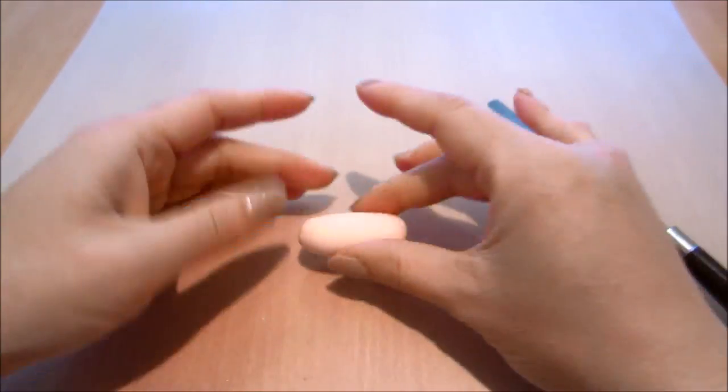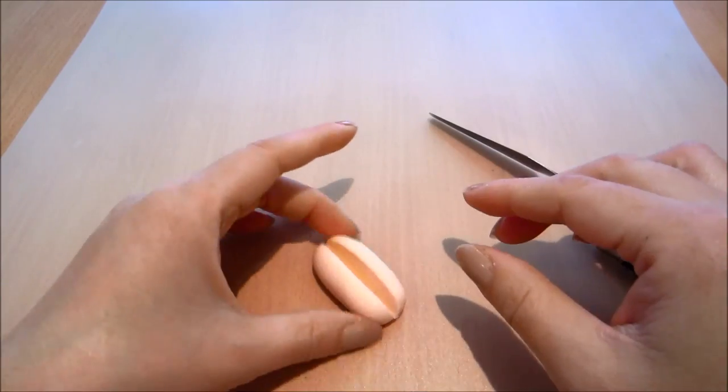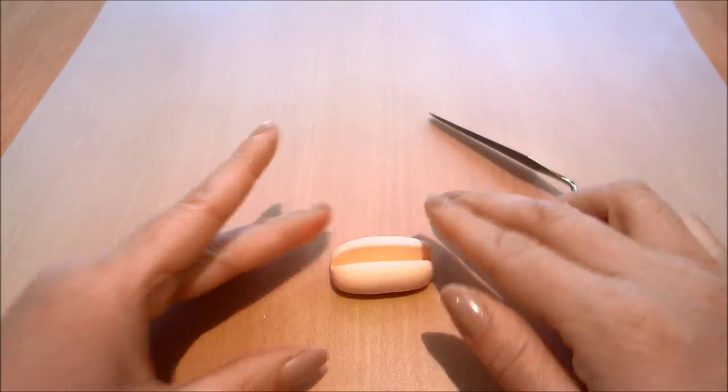Now I'm going to ball up some lightly colored orange fondant and then I'm going to stretch it out to form almost like a sausage shape. I'm using my palette knife to cut it to look like a little bun.